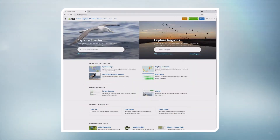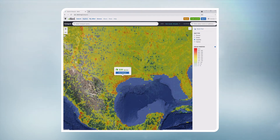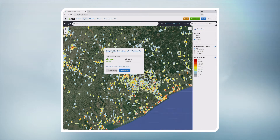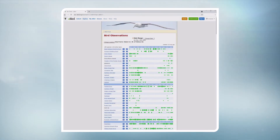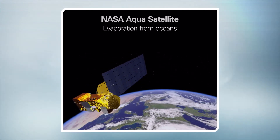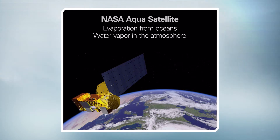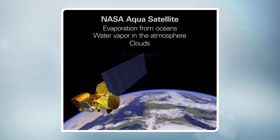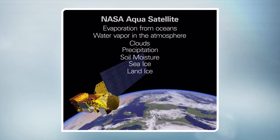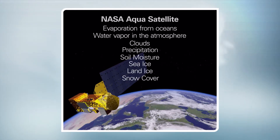Through eBird, an online bird database, and NASA Earth observing satellite data, we can view the life cycles of birds, which ultimately helps us understand our bird populations. NASA's Aqua satellite can measure evaporation from oceans, water vapor in the atmosphere, clouds, precipitation, soil moisture, sea ice, land ice, and snow cover on the land and ice.